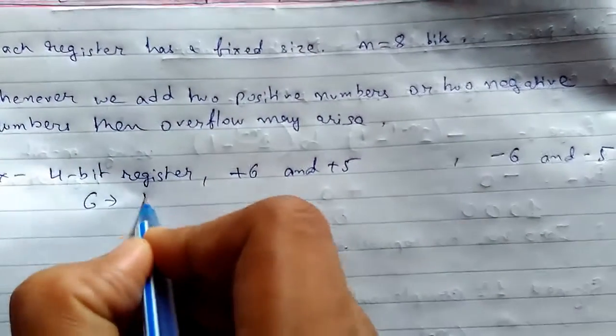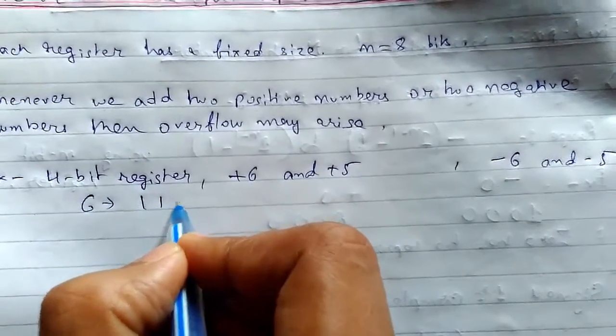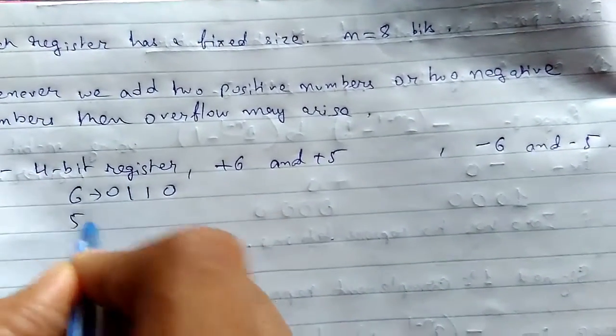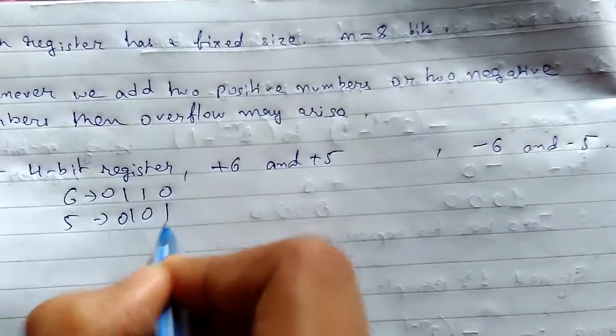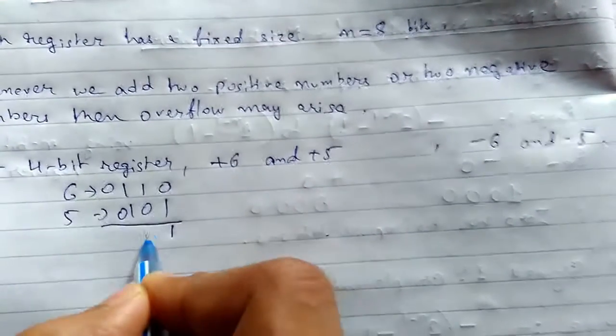For +6, the representation is 0110 and +5 is 0101. The result is 1011 with an extra 0.